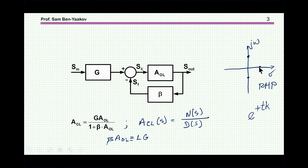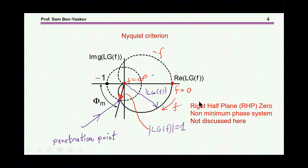A pole in the right half plane means the system will be unstable. A special case is when you have a solution on the jω axis — the imaginary axis — which produces oscillation. In general, we are talking about poles in the right half side of the complex plane. To tell if such poles exist, we can use the Nyquist criterion.